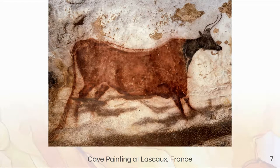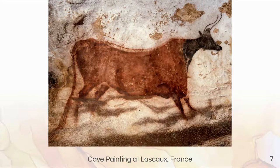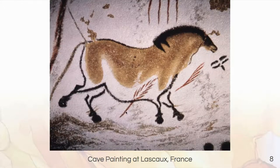The first set of images we're going to look at are the cave paintings at Lascaux, France. When we look at these cave paintings, one of the things we should notice is that they often depict animals — bison, deer, horses. We also often see arrows, because hunting was very, very important to ancient people.